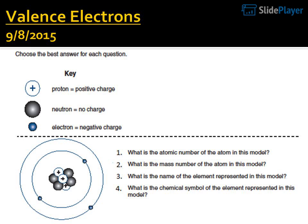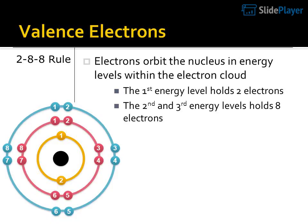Valence Electrons. September 8, 2015. Valence Electrons — 2-8-8 rule. Electrons orbit the nucleus in energy levels within the electron cloud.